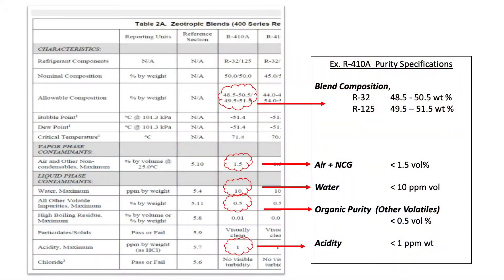So I want to put one up here for example — R410a, a very common refrigerant — and we can see the types of things that are considered as far as the purity specification. There's overall purity, organic purity of the refrigerant itself, air and non-condensables, moisture, non-volatile residue, acid, and some other things.